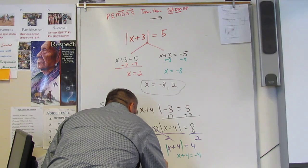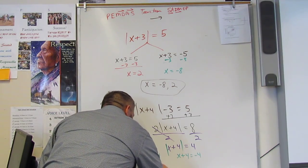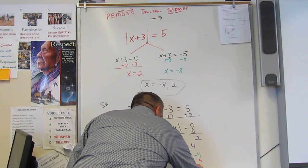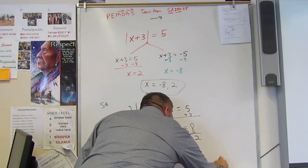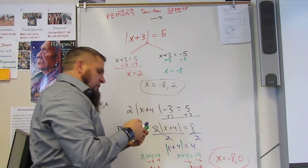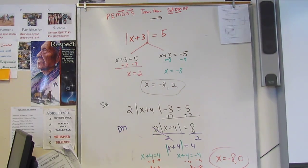So minus 4, minus 4, x equals 0. And then minus 4 and minus 4, and x equals negative 8. So x equals negative 8 and 0. And I always put the lowest number first. And that's absolute value. Really quick.